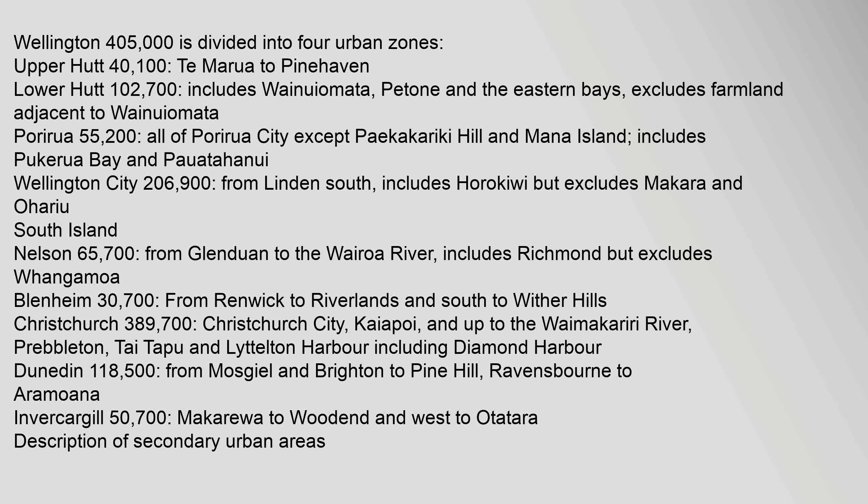Wellington City 206,900, from Linden South, includes Karori but excludes Makara and Ohariu. South Island: Nelson 65,700, from Glenduan to the Wairoa River, includes Richmond but excludes Wakamarina. Blenheim 30,700, from Renwick to Riverlands and south to Wither Hills. Christchurch 389,700, covering Christchurch City, Kaiapoi and up to the Waimakariri River, Prebbleton, Tai Tapu and Lyttelton Harbour including Diamond Harbour. Dunedin 118,500, from Mosgiel and Brighton to Pine Hill, Ravensbourne to Aramoana. Invercargill 50,700, from Makarewa to Woodend and west to Otatara.